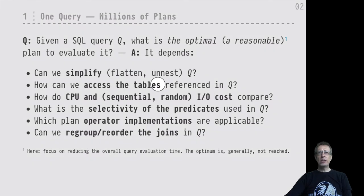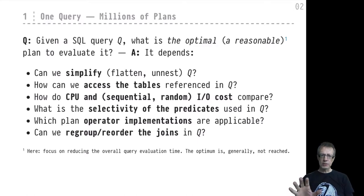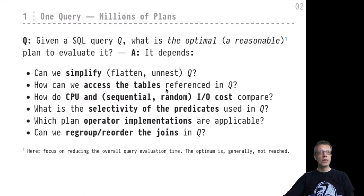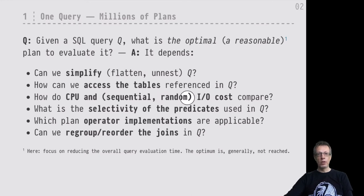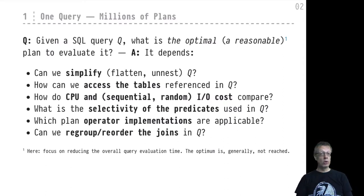There are multiple ways to access tables: we could sequential scan, or we could try to identify predicates that allow for index scans. Index scanning promises performance benefits but can also mean more I/O if we use unclustered indexes. All of this has to be taken into account. How do CPU and I/O costs compare? We know there is the good and bad version of I/O — sequential and random. Are we operating in a main memory environment with no I/O at all, or a purely SSD-based environment where random I/O is acceptable?